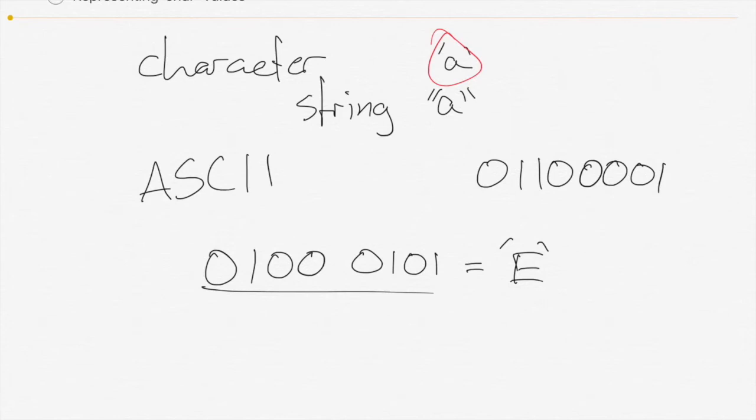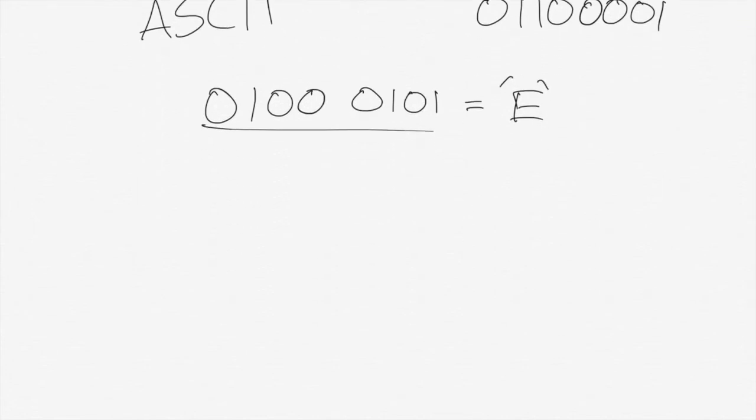Now it's important to note that since we're storing a code that could also be a number, number operations work on chars as well. For example, in Java, you might quite easily see the line char x equals the character capital A, and then I could ask it to do increment by one. After doing these two lines, x is going to be equal to the character B.